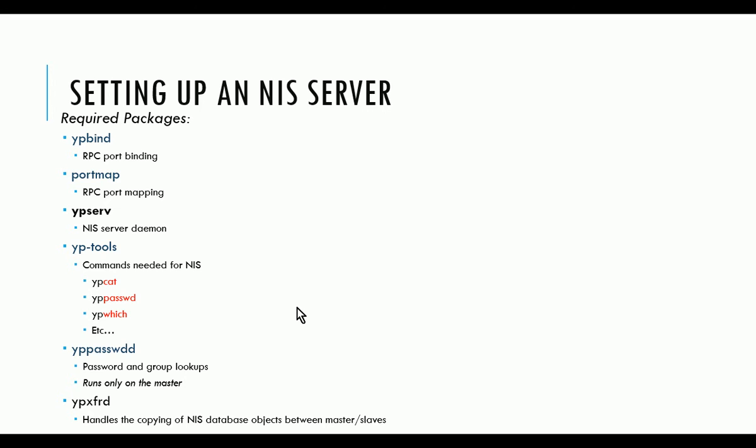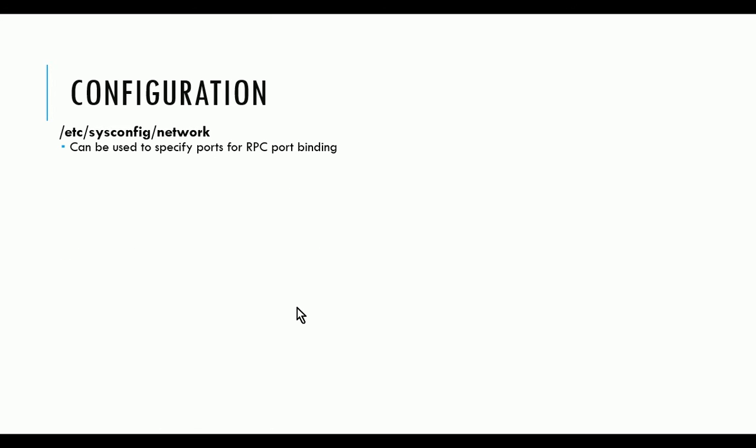For configuration, once you get all those packages installed, under /etc/sysconfig/network, there'll be a config file used by NIS for specifying RPC ports for port binding. Why would you want to specify the ports? If you have to run a firewall, you'll need to specify the ports — you can't use a firewall with dynamic ports because the firewall won't know what ports to allow. Alternatively, just harden your server and don't use a firewall. This should all be on your local area network — you would not want people on the public internet being able to access your NIS server, as that would expose things like your password hashes.